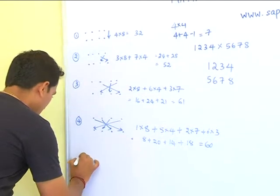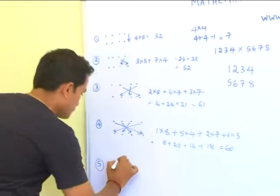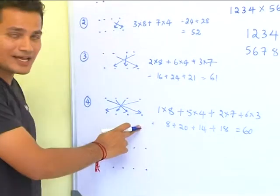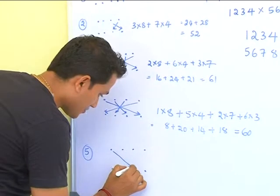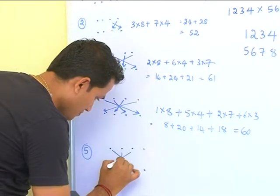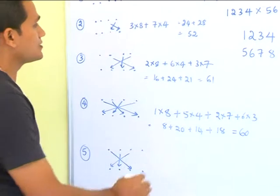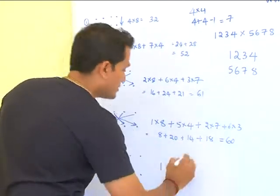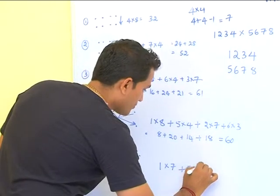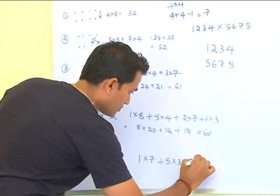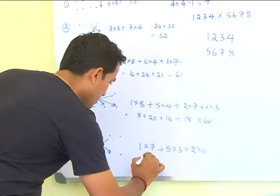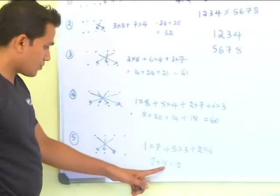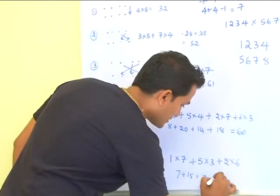Now fifth step. We'll remove the last digit and perform the risk of multiplication with the first three digits. So what will it be? One into seven plus five into three plus two into six. That will be seven plus fifteen plus twelve, which equals thirty-four.